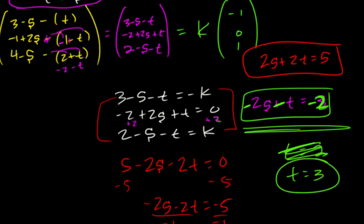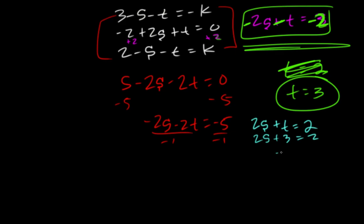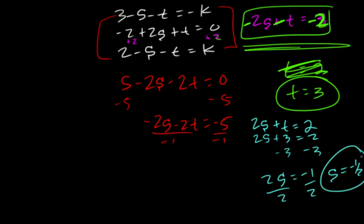Now if we take t = 3 and plug it into 2s + t = 2, we have 2s plus 3 equals 2. Subtracting 3 gives 2s equals negative one. Dividing by two, s equals negative one half.